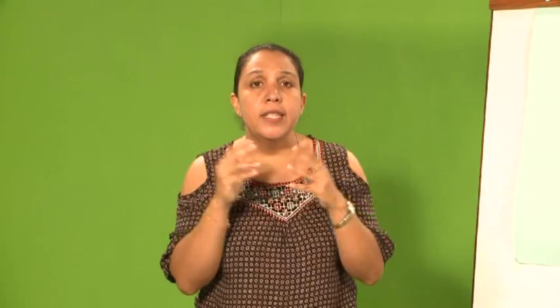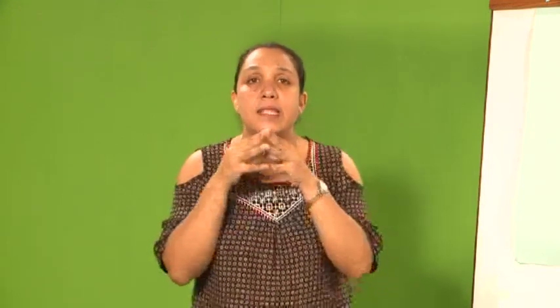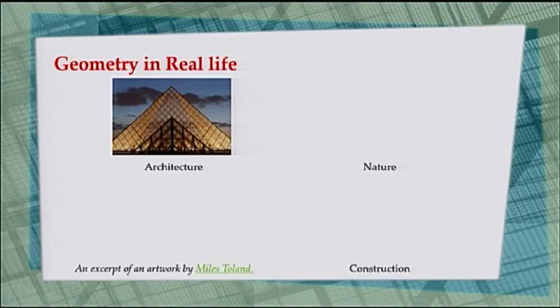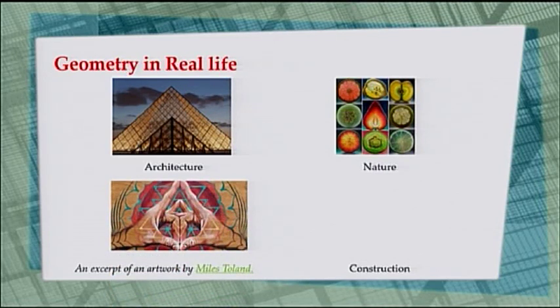When we talk about geometrical construction, we can hear the word geometry. Where can we see geometry in real life? The first thing is that geometry can be seen in architecture — you can see that picture, that's the Louvre Museum in Paris. The second one, we can see geometry in nature. And then in art — this piece of work was done by Myles Thielen.